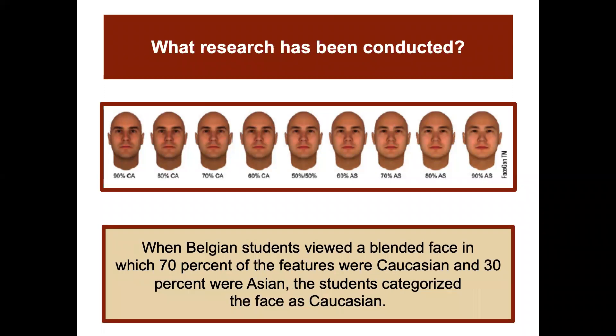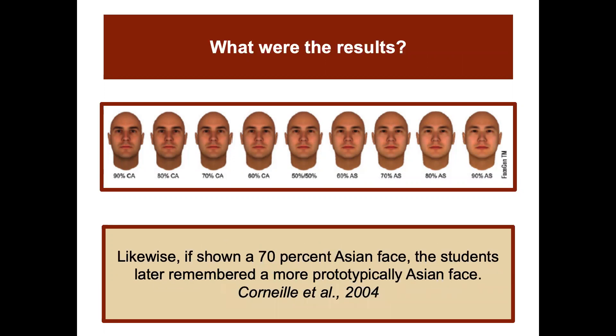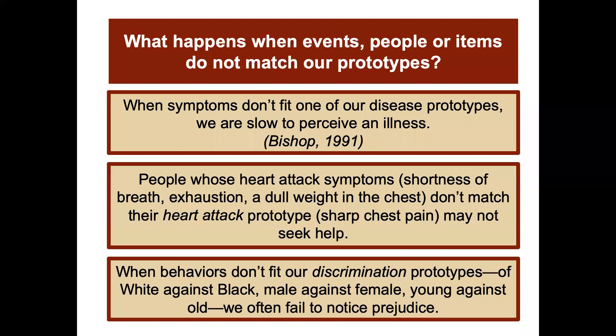When Belgian students viewed a blended face in which 70% of the features were Caucasian and 30% were Asian, they categorized the face as Caucasian. However, when shown a 70% Asian face, the students later remembered a more prototypically Asian face. This shows what happens when people or items do not match our prototypes — those stereotypes of those concepts.